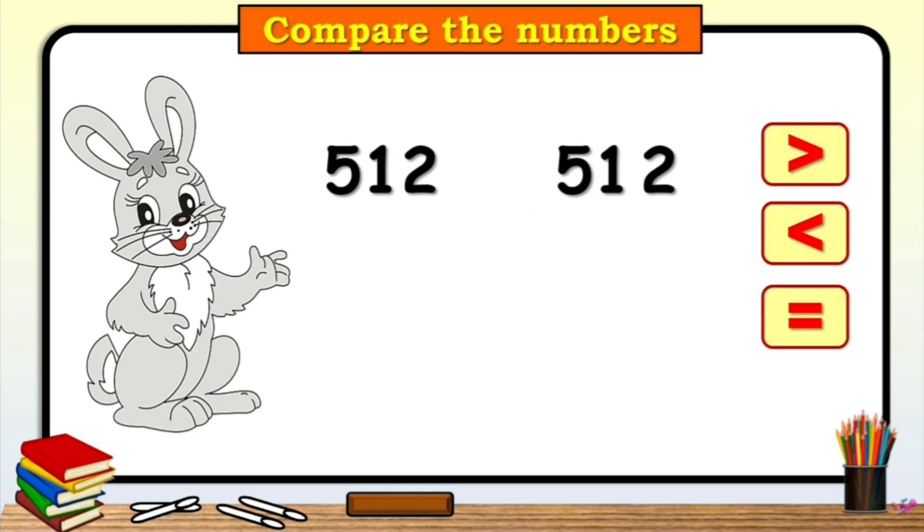Let's take next example. 512 and 512. Here, each digit in corresponding place values are equal. Both numbers have 5 in their hundreds place, 1 in their tens place and 2 in their ones place. So, the answer is equal to 512 is equal to 512.